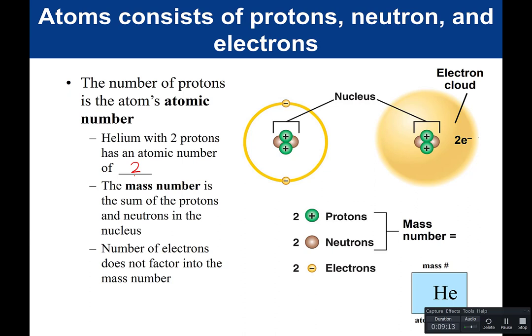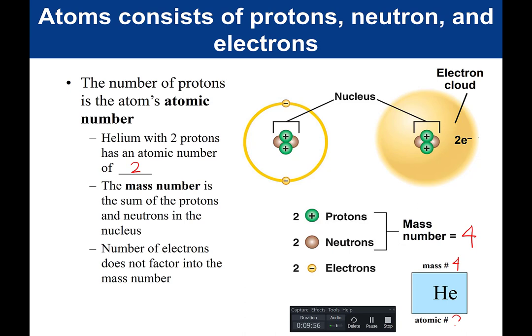If we look at helium and we look in the nucleus of the atom, you'll notice that we have two protons and two neutrons. So helium's mass number is 4, and it has an atomic number of 2. The mass number is 4 and the atomic number is 2.